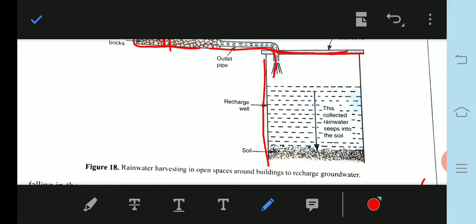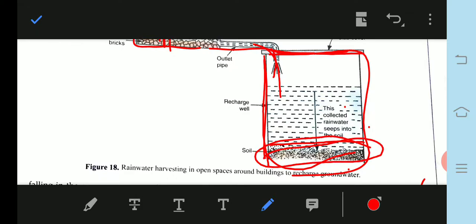The water collects in this tank and then seeps into the soil. This collected water percolates into the soil, and this way the groundwater is recharged. Then we can use this water from tube well or hand pump again.